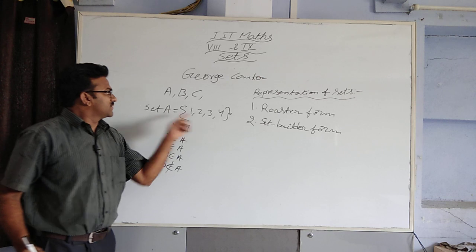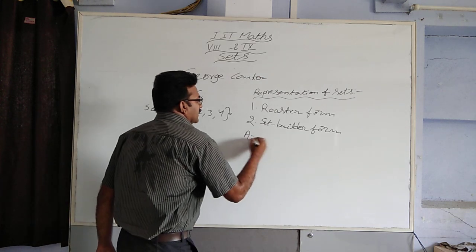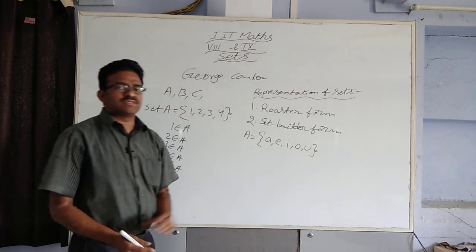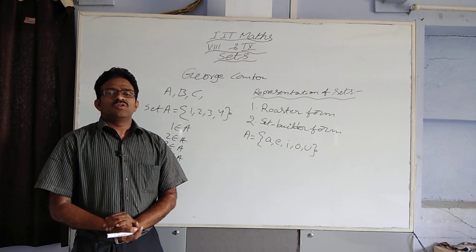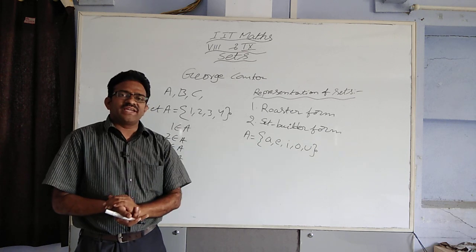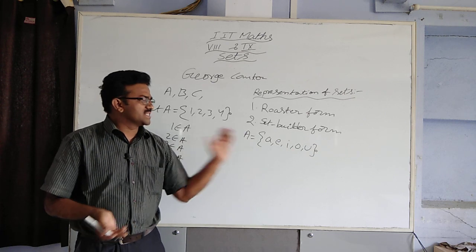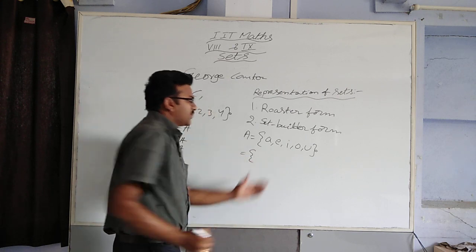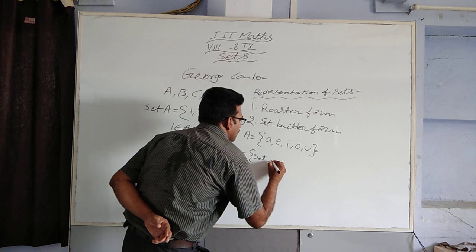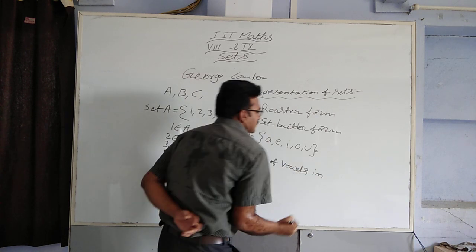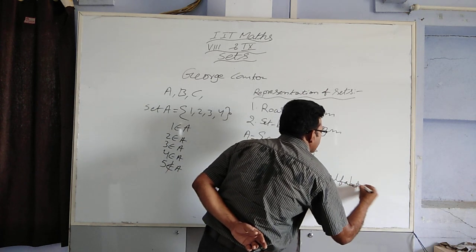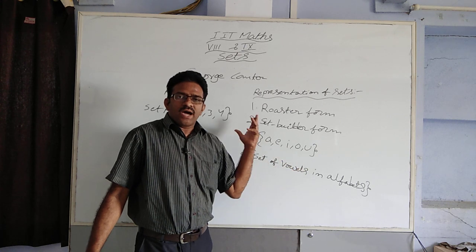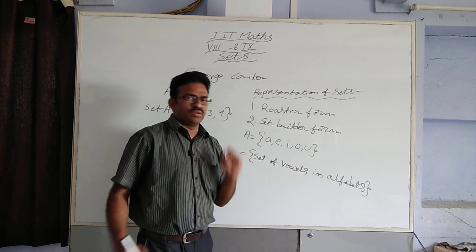For example, this is the roster form. I want to take another one: A equal to {a, e, i, o, u}. These are vowels in the alphabets, separated with commas. This is roster form. Now, set-builder form. In set-builder form, the elements satisfying a property or rule are written. Here we are writing the property: set of vowels in alphabets. So this is the condition, or the property, or the rule.